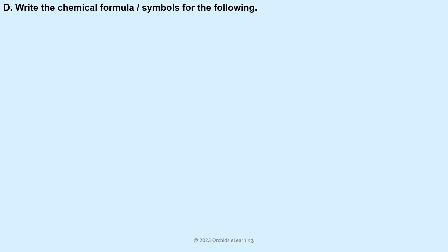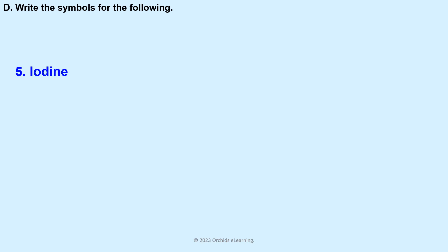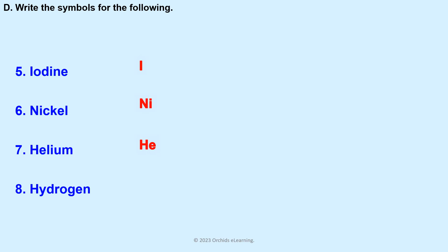Write the chemical symbols for the following: Aluminium — Al. Fluorine — F. Barium — Ba. Potassium — K. Iodine — I. Nickel — Ni. Helium — He. Hydrogen — H.